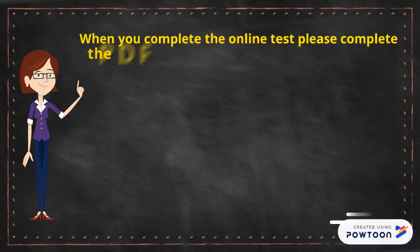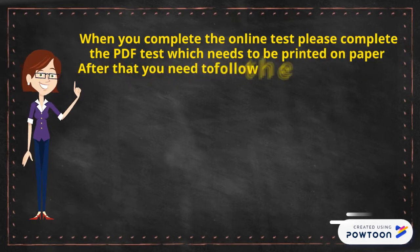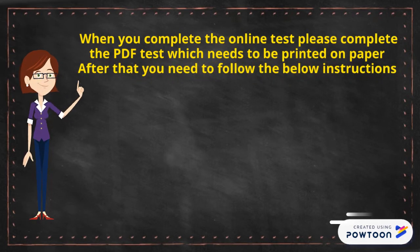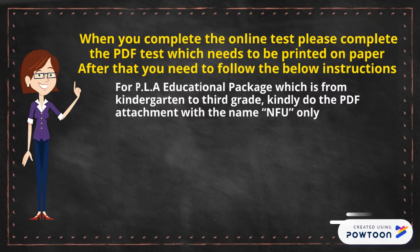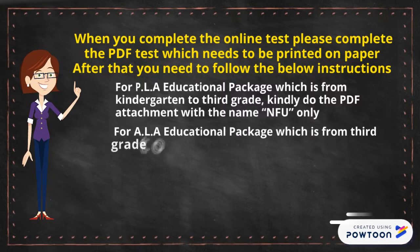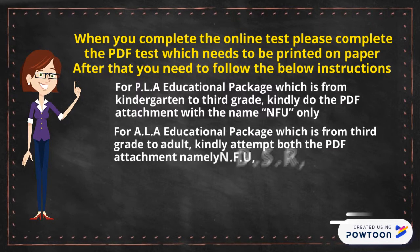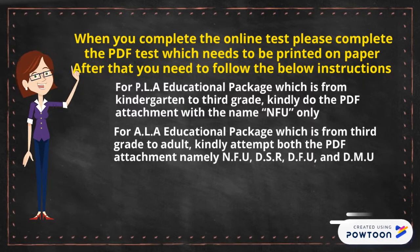When you complete the online test, please complete the PDF test which needs to be printed on paper. After that you need to follow the below instructions. For PLA Educational Package, which is from kindergarten to third grade, kindly do the PDF attachment with the name NFU only. For ALA Educational Package, which is from third grade to adult, kindly attempt both the PDF attachments namely NFU, DSR, DFU, and DMU.